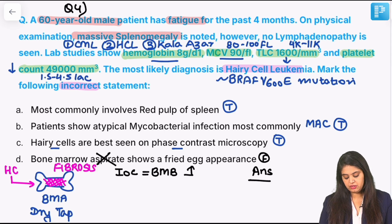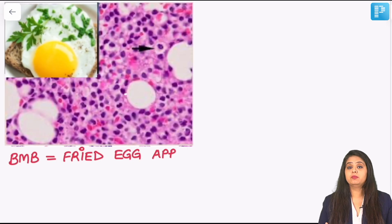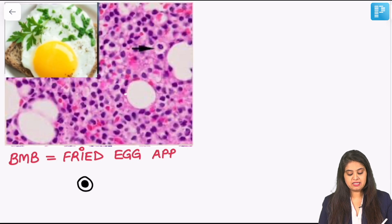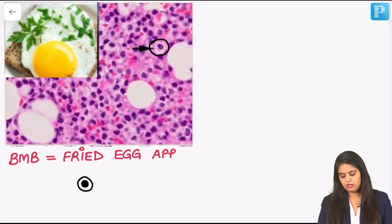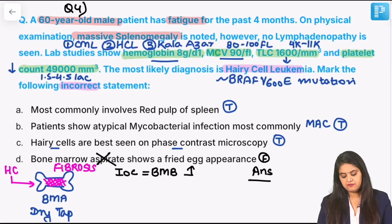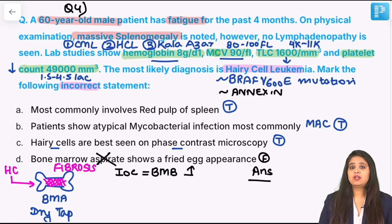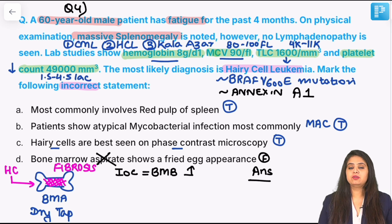Fried egg appearance on bone marrow biopsy: the nucleus is surrounded by a white halo — that is how these hairy cells look. Don't forget: the marker for hairy cell leukemia is Annexin A1. Annexin 5, on the other hand, is for apoptosis.